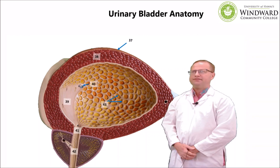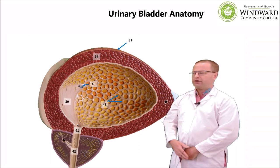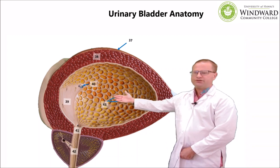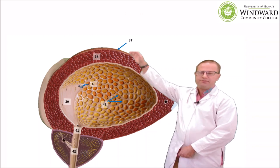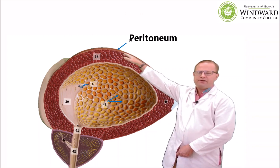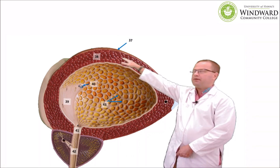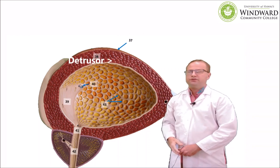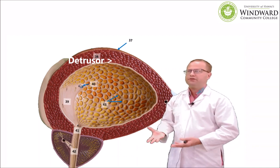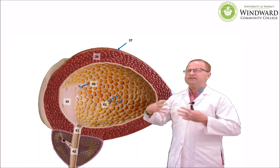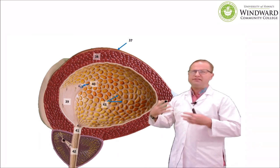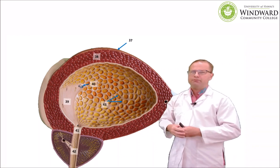Let's talk about what happens to the urine after it leaves the kidneys via the ureters. The urine travels via the ureters to the urinary bladder. What we have here is a sagittal section of the male urinary bladder. Up top is a layer of peritoneum covering the top side of the bladder. Underneath that is a thick muscular layer called the detrusor muscle — the muscle that helps to micturate or void the urine during the micturation reflex. It's smooth muscle and involuntary, and it begins to contract after as little as 200 ml of fluid is inside the urinary bladder.